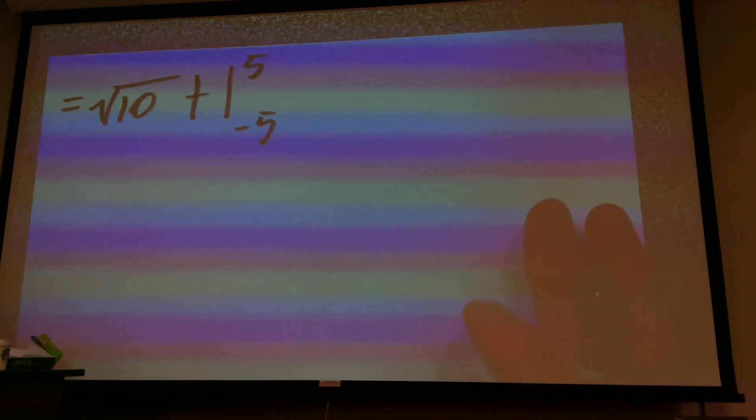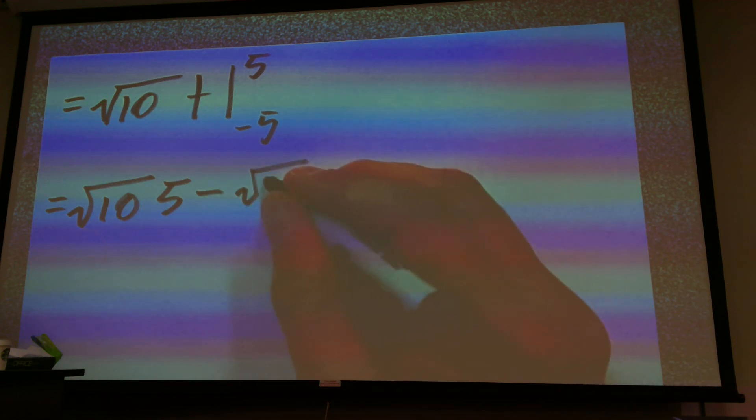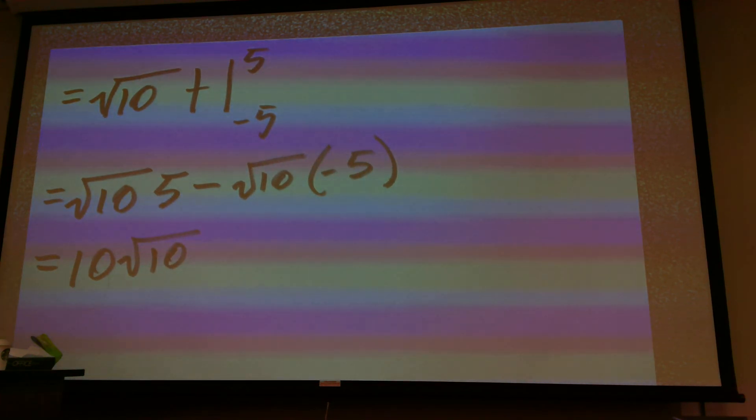is that this would equal the square root of ten multiplied by t evaluated at negative five and at five. So now we're going to have to plug our boundaries into this one. So that would be the square root of ten times five minus the square root of ten multiplied by negative five. So that would be five root of ten plus five root of ten, and then ten root of ten. Because we have two five root of ten, so if we add it together, it's ten times the square root of ten.